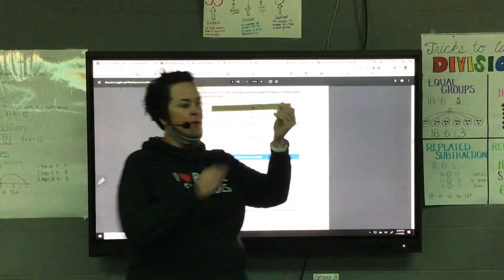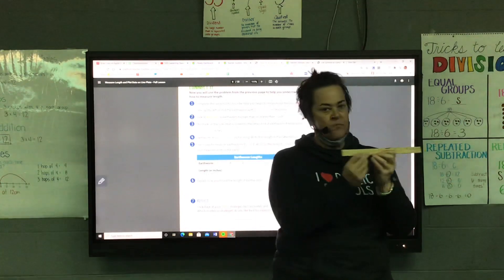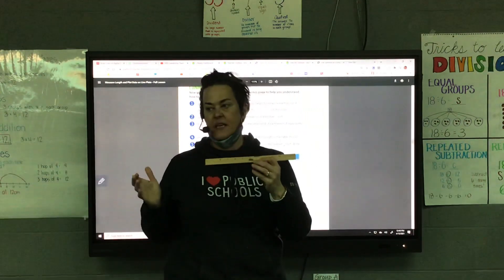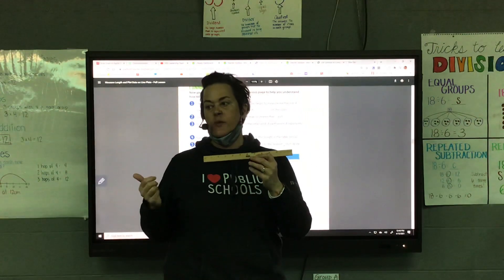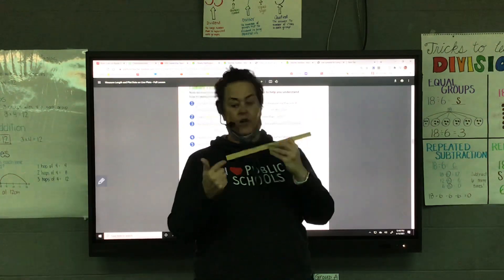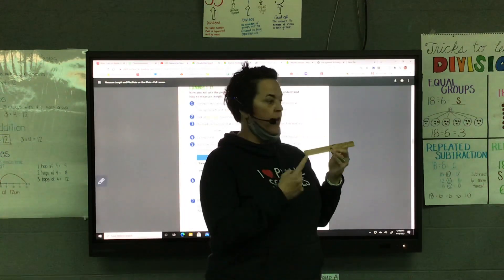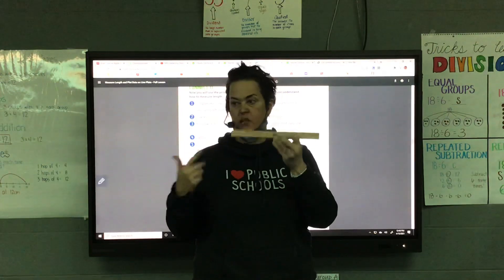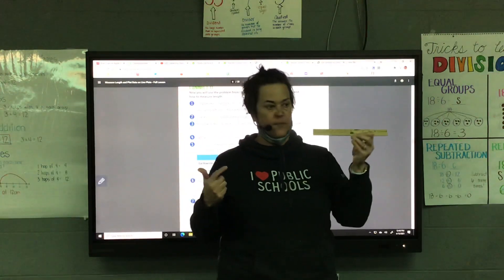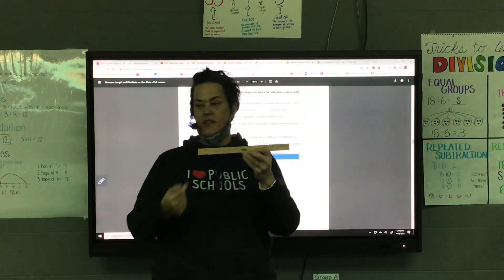Remember when we were using the rulers yesterday? When we measure something, where do we start it at? And what if there's not a zero, like on this ruler? What if there's not a zero? At the first line. Yeah, that very first line.